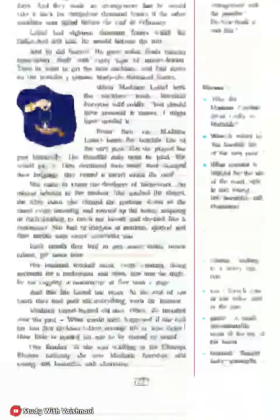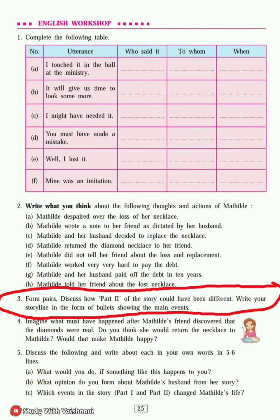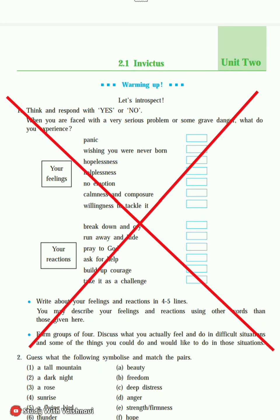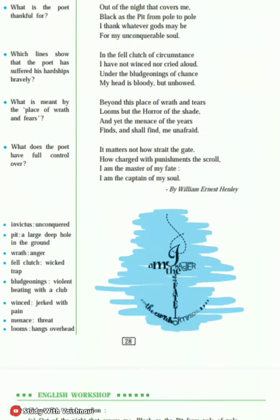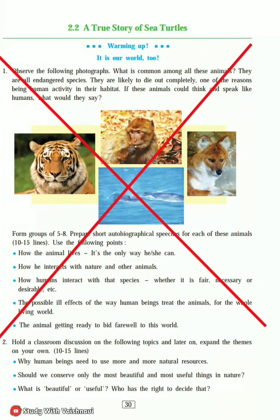1.5 - 'The Necklace' part 1 is not reduced, but part 2 English workshop question number 3, page number 25, question number 3 was reduced. Now see Unit 2: 2.1 - page number 27, question number 1, warming up question number 1 was reduced.